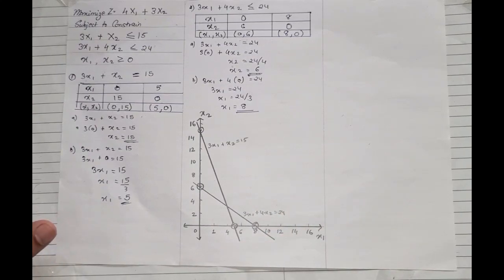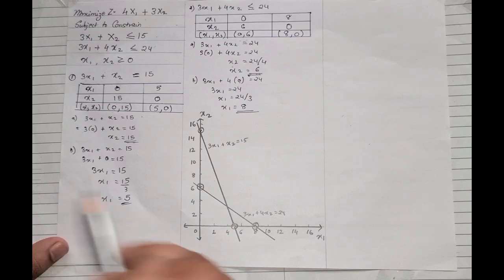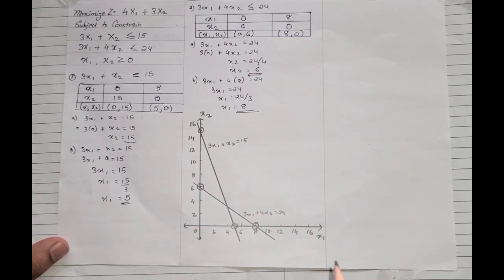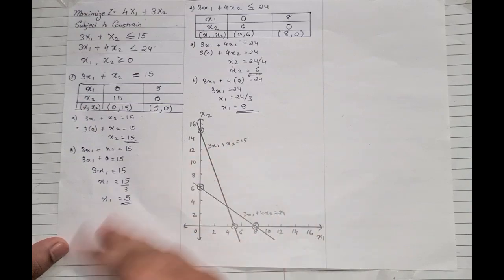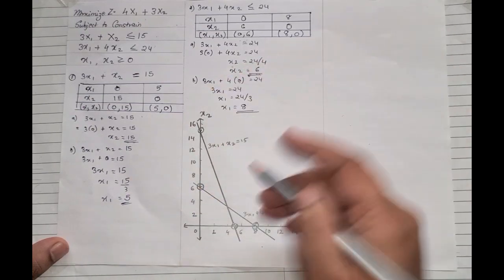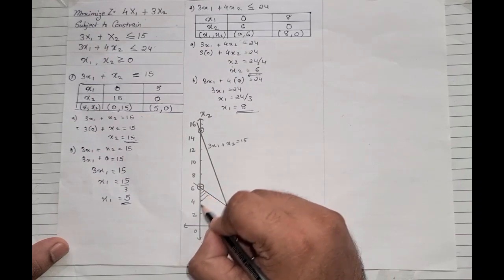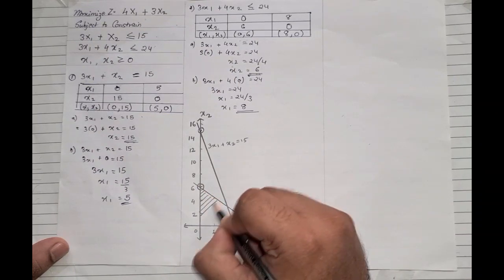Now we need to find the feasible region. Under maximization, the feasible region is always the inner part of the graph. In minimization it would be the outer part. Since this is a maximization problem, the inner region is our feasible region.